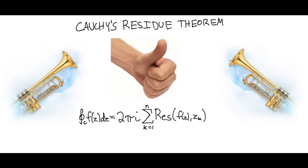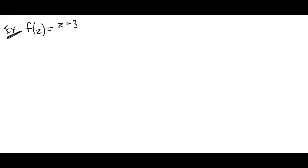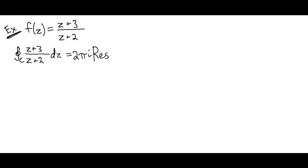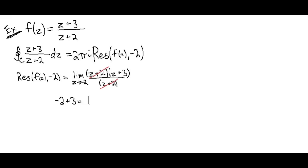We have successfully proved Cauchy's Residue Theorem. Now it's time for an example — let's start off with a simple one. Our function is f = (z + 3) / (z + 2). Our pole here is z = −2. The integral of a region around that pole is 2πi times the residue of the function at z = −2. We multiply the function by (z + 2) and take the limit of what's left as z goes to −2. We are left with the value of 1. So the integral of this function is 2πi times 1, which is 2πi. Okay, that one was way too easy.